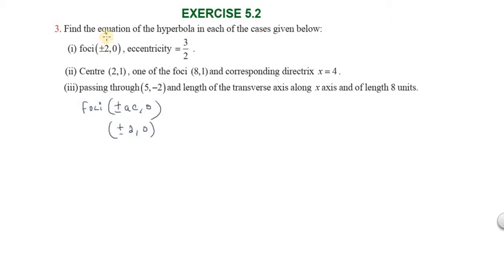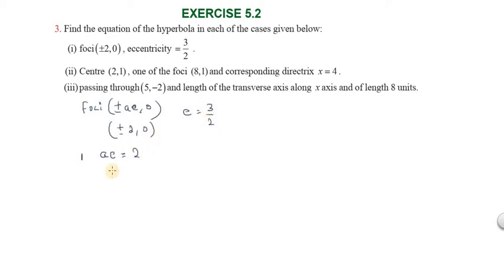So find the equation of the hyperbola in each of the cases given below. First one: the focii are (±2, 0) and the eccentricity is 3/2. So the focii are of the form (±ae, 0), and since (±ae, 0) = (±2, 0), we get ae = 2. And eccentricity e = 3/2.